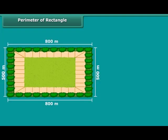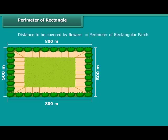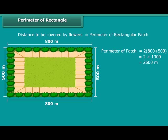We wish to plant flowers on all sides of a rectangular patch of land whose length is 800 m and breadth is 500 m. Calculate the total distance to be covered by flowers. The distance to be covered by flowers will be equal to the perimeter of the rectangular patch. The perimeter of the rectangular patch is 2,600 m. Therefore, the total distance to be covered by flowers is 2,600 m.